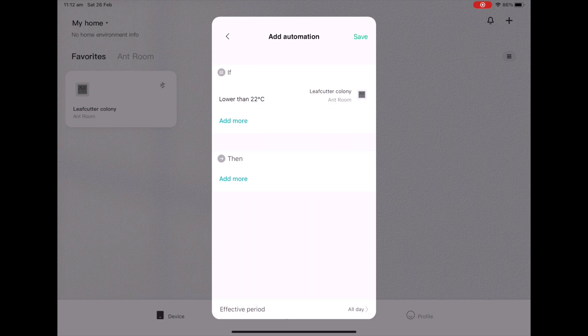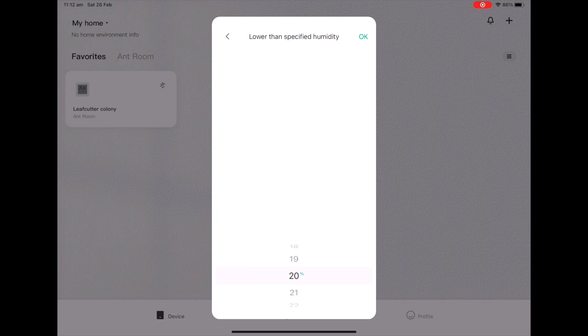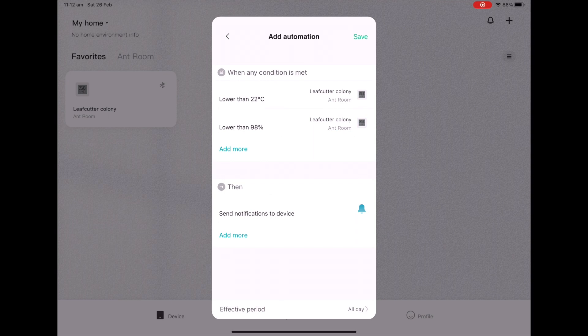Then set another one and add when any condition is met. Go back to leafcutter colony. Select lower than specified humidity and select a number that you want to be notified that you've dropped below. Once you've done that ask it to send a notification under the then area to your device. Name this automation and make sure it's switched on as it is here.